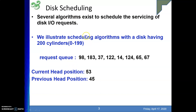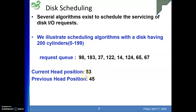To understand various algorithms, we take an example disk with 200 cylinders, meaning 200 tracks on a platter, numbered 0 through 199. We have one input request queue. Suppose requests have come for cylinder numbers 98, 183, 37, 122, 14, 124, 65, and 67. These are the requests for particular cylinder numbers. Currently the head is at position 53, meaning cylinder number 53.